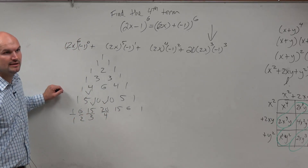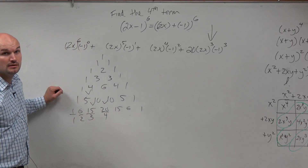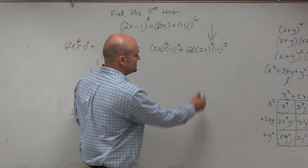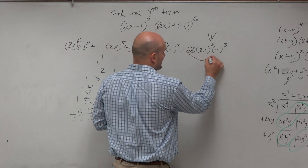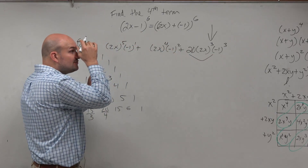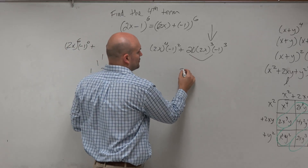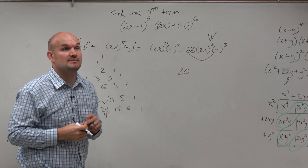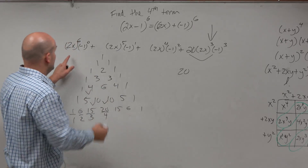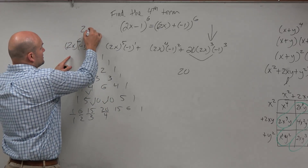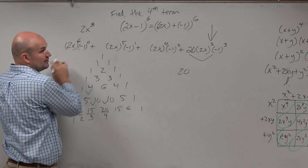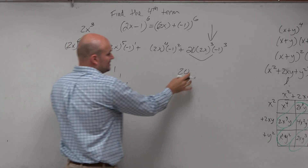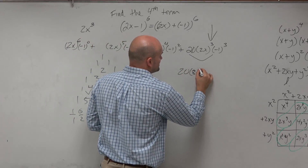Does anybody have any questions on how I got the 20? OK. So now let's simplify this — because this is all I need to simplify, guys. I don't need the rest of this; I just need the fourth term. So we have 20. Then (2x) cubed is 2x times 2x times 2x, which is 8x cubed. If you just wrote it without parentheses, you would not get 8x cubed. So be careful — this is 8x cubed.